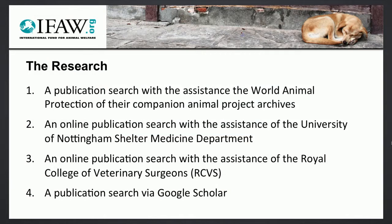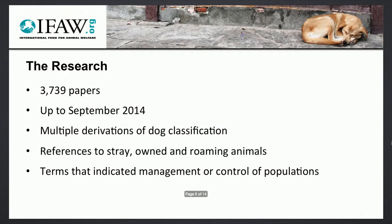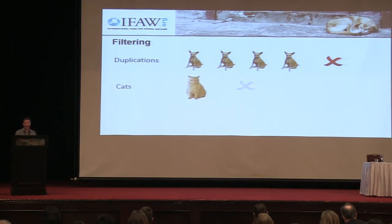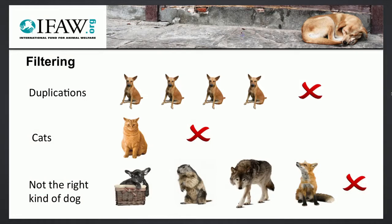Using broad search terms, a total of 3,739 papers, reports and articles were identified up until September 2014. Search terms were all in English and used multiple derivations of companion animal and dog classification, along with references to stray, owned or roaming animals, and also looked for terms that would indicate management or control of populations. Using such wide terms to ensure we gathered as much data as possible, we had to go through some filtering of the results. To begin with, any duplications from searches were excluded. As the term 'companion animal' sometimes referred to cats, they had to go as well. Additionally, anything that referred only to pet dogs, dog behaviour, or wild canine populations — such as prairie dogs, wolves or foxes — were also excluded. Any papers written prior to the year 2000 were also excluded.